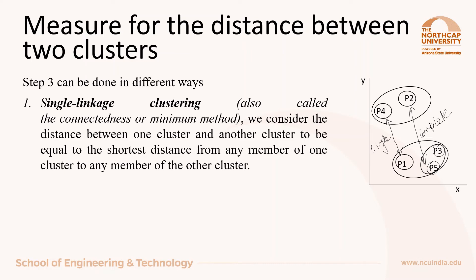The first way is single linkage clustering, which is also called connectedness or minimum method. Here we consider the distance between one cluster and another cluster to be equal to the shortest distance from any member of one cluster to any member of another cluster. For example, the shortest distance — let's say it is between P1 and P4 — so we will consider this.